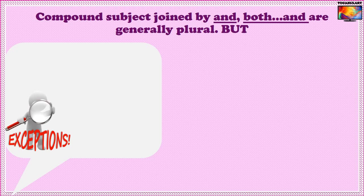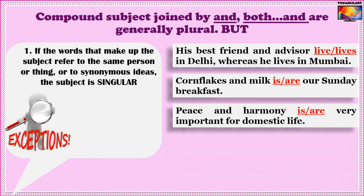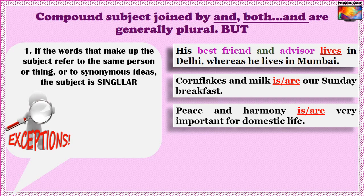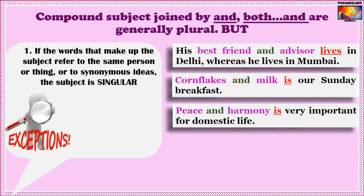There are some exceptions for this rule. If the words that make up the subject refer to the same person or thing, or to synonymous ideas, the subject is singular. For example, 'his best friend and advisor' refers to the same person — singular verb: 'His best friend and advisor lives in Delhi.' 'Cornflakes and milk is our Sunday breakfast' because they make a single unit. Similarly, 'peace and harmony' are synonymous ideas, so: 'Peace and harmony is very important for domestic life.'